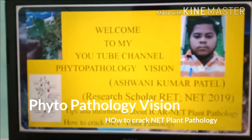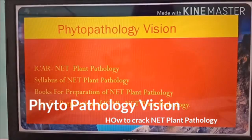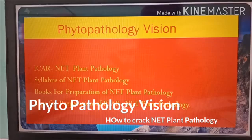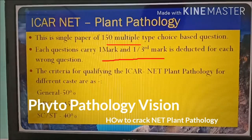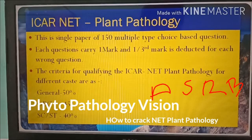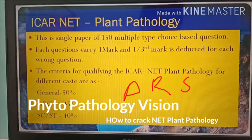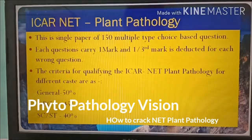Now we come to know about ICRNET Plant Pathology. This is a single paper of 150 multiple choice type based questions. Each question carries one mark and one-third mark is deducted for each wrong question. This exam is conducted by ASRB and ICAR, and this is the preliminary exam for ARS, that is Agriculture Research Service. The qualifying criteria decided by ASRB for different categories are: General 50%, OBC 45%, and SC/ST 40%.